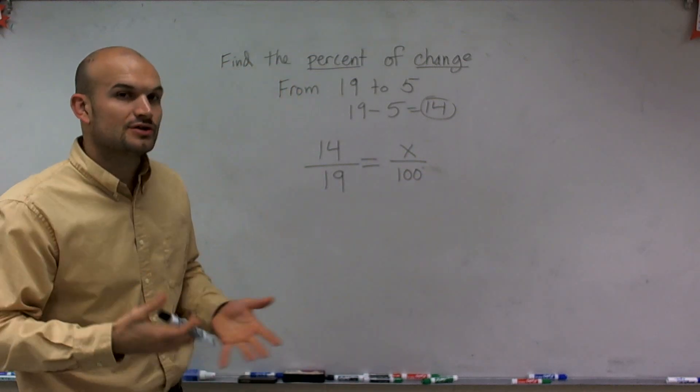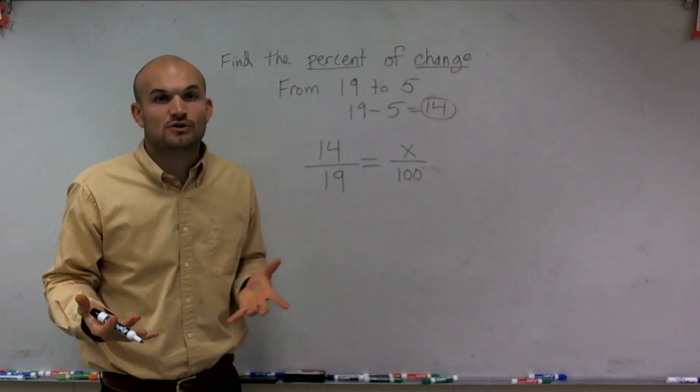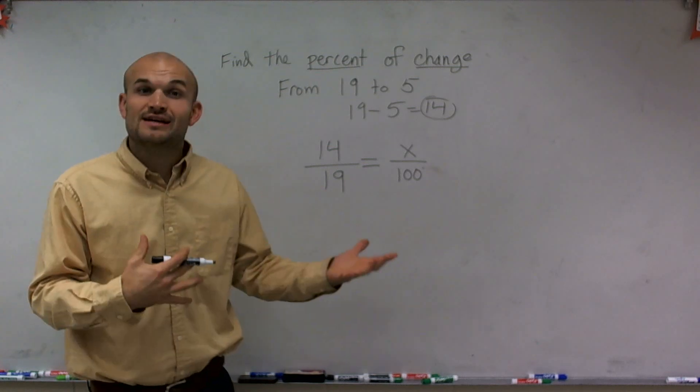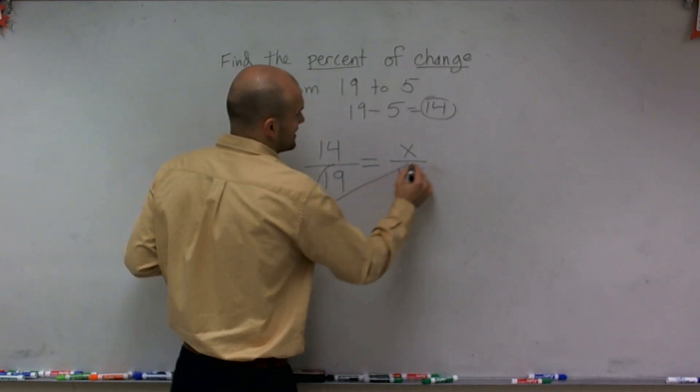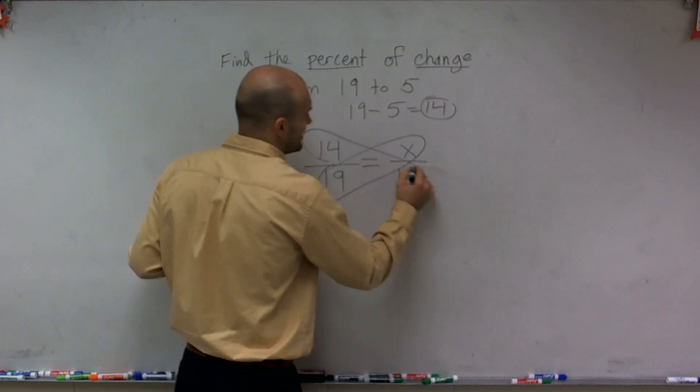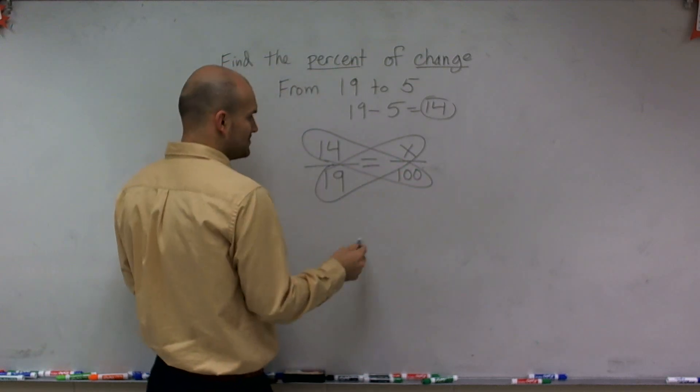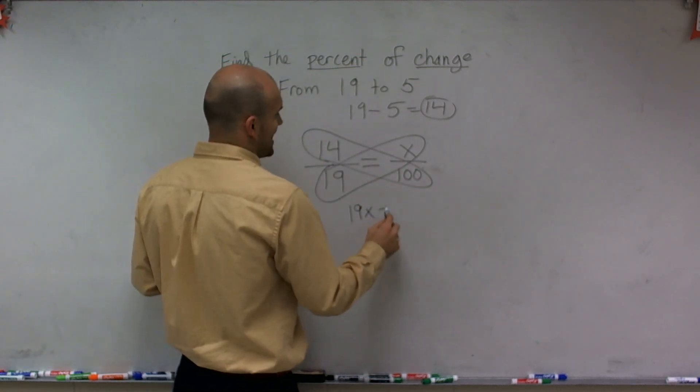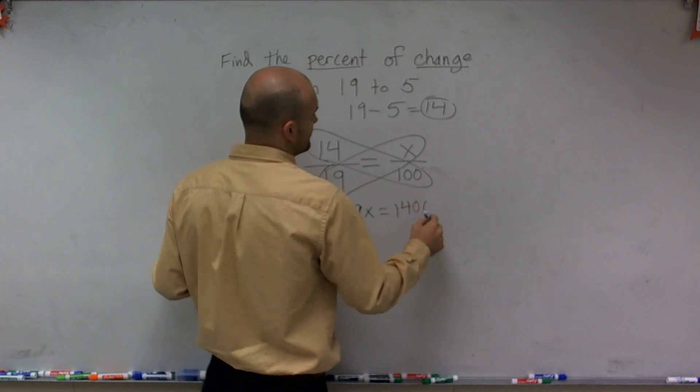So now what we're going to do—a lot of times when I teach students how to solve equations, I like to show them the inverse operations. Since we're just talking about percents, we're going to kind of make this quick. What we're going to do is use cross multiplication, so therefore I'm going to have 19x equals 1400.